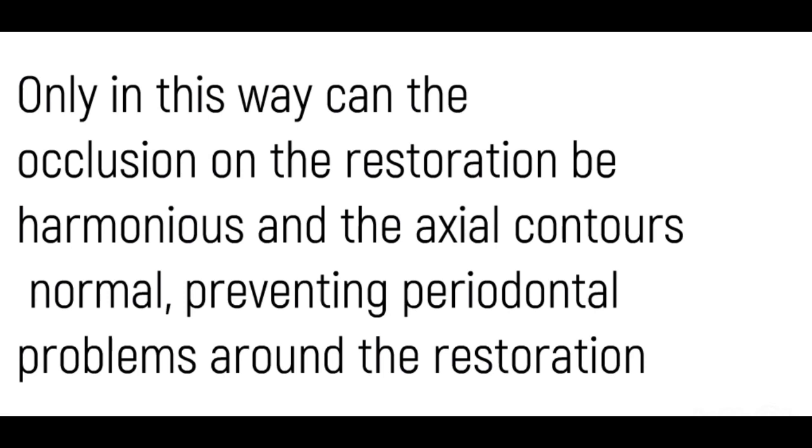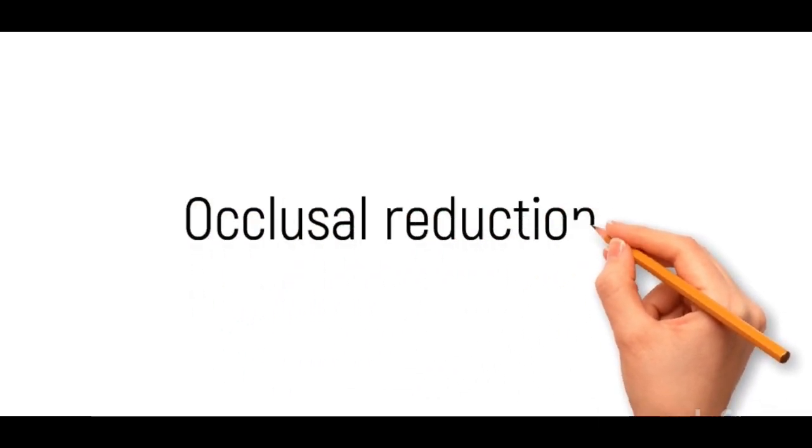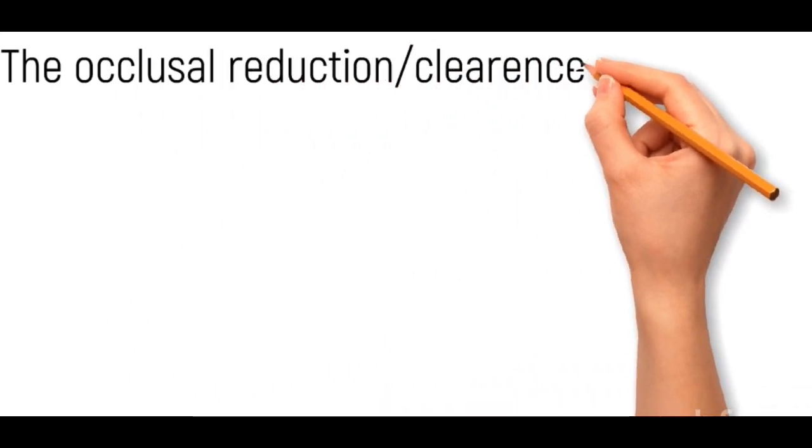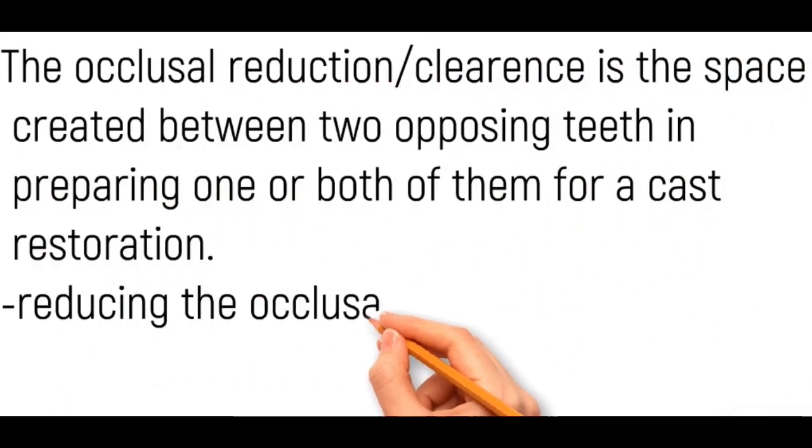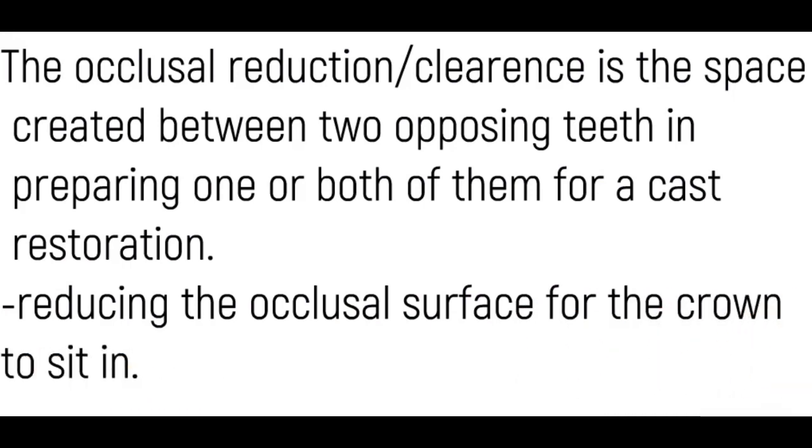Talking about the first component, occlusal reduction. The occlusal reduction or occlusal clearance is the space that is created between two opposing teeth in preparing one or both of them for a cast restoration. In simple words, we are just reducing the occlusal surface for the crown to sit in.